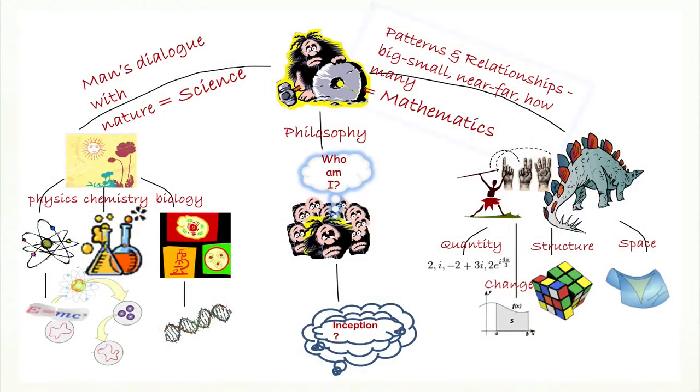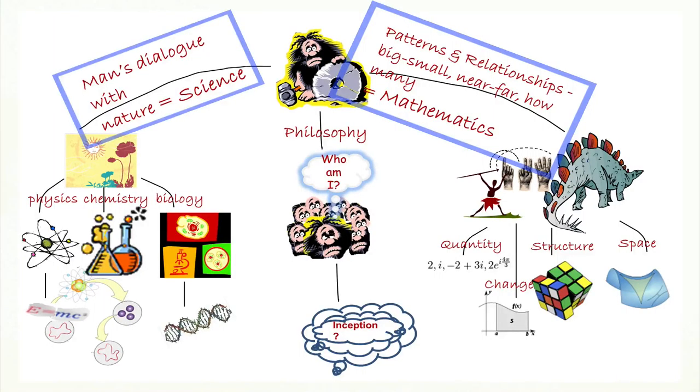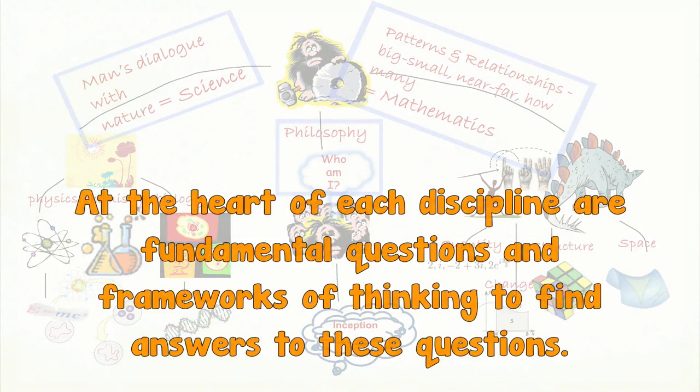Questions about patterns and relationships led to the creation of a discipline called mathematics. Questions about nature and natural phenomena led to the discipline of science. Questions about our past led to the discipline of history. Questions like who am I and what is my purpose led to the discipline of philosophy. At the heart of each discipline are fundamental questions and frameworks of thinking to find answers to these questions.